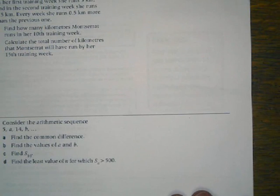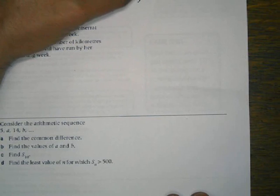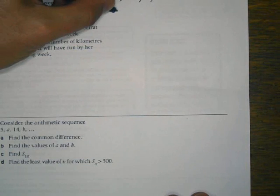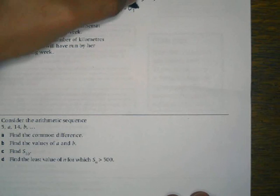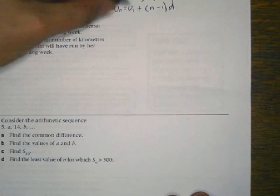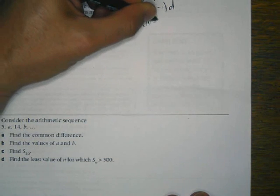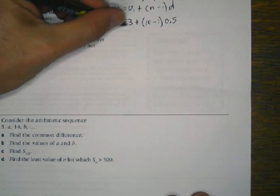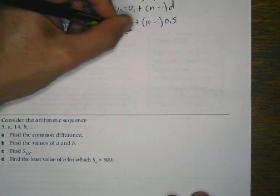Montserrat is training for her first race. The first week she does 3 kilometers. The second week she increases to 3.5. The third week she runs 0.5 more. Find how many kilometers Montserrat runs in her tenth week of training. We're going to use the formula U sub n equals U sub 1 plus n minus 1 times D. We know D equals 0.5, U sub 1 equals 3, and it's the tenth week. We simplify and get U sub 10 equals 7.5 kilometers.